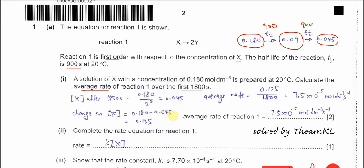If you don't want to use that method, you can do a simple calculation. The concentration of X after 1,800 seconds equals 0.18 — the initial concentration — divided by 2², because it undergoes two half-lives. That also gives 0.045. Then you get the change in concentration using initial concentration minus the final concentration, giving 0.135 mol per dm³.